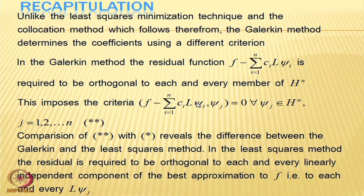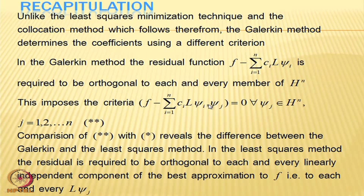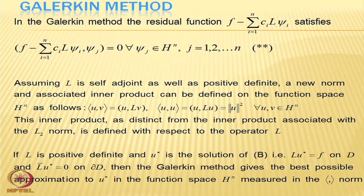In the Galerkin method, the residual must be orthogonal to each and every member of the space Hn. In the least squares method, the residual is required to be orthogonal to each L psi j, while in the Galerkin method, the residual function has to be orthogonal to each and every basis function psi j. That is the fundamental difference: in the Galerkin method, I enforce that the residual be orthogonal to each basis function of function space Hn rather than to each L psi j.